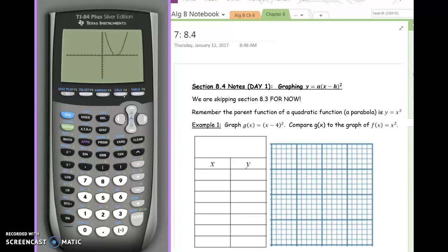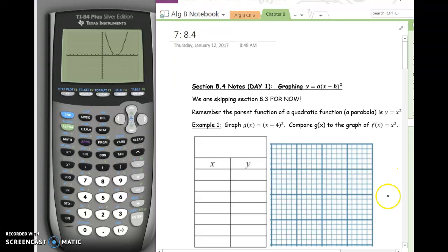I've told students in the past, inside the parentheses is like crazy town, backwardsville, opposite, whatever. Anything that happens inside the parentheses is the opposite of what's actually happening on the graph.